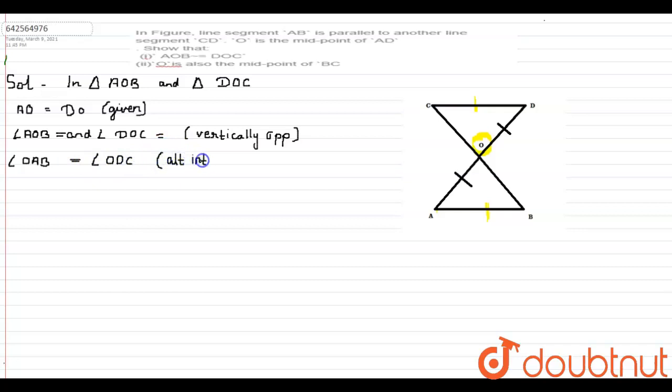So now we can say that triangle AOB is congruent to triangle DOC, and the reason is angle-side-angle (ASA).